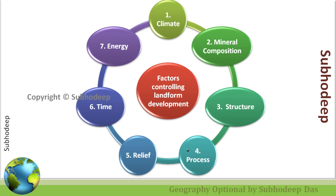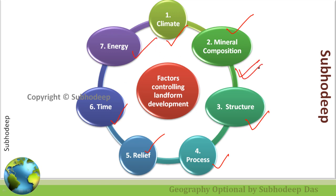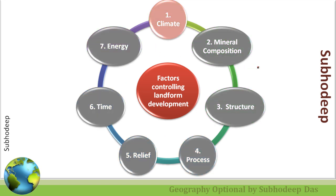Let's focus upon the factors controlling landform development. Overall, holistically there are seven factors which mainly control landform development: the first is climate, the second is mineral composition, the third is structure, then process, relief, time, and energy. These are the factors which actually control landform development — let's focus upon them one by one.